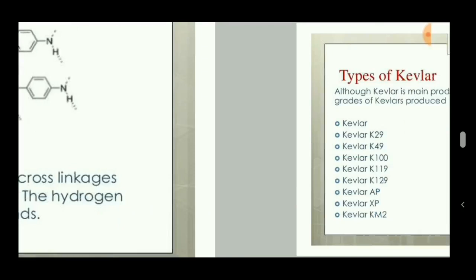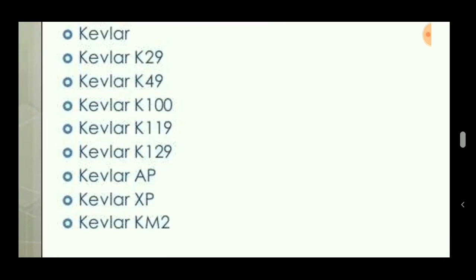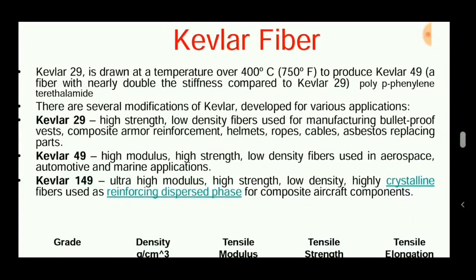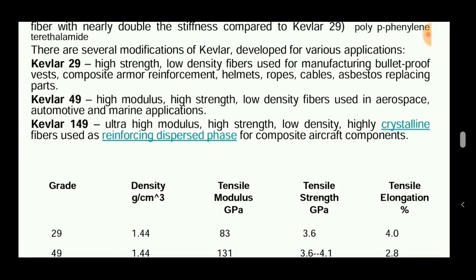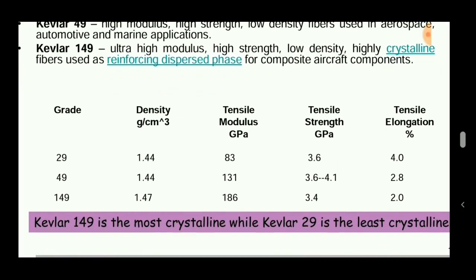The types of Kevlar products are many. Some include Kevlar 29, 49, 100, 119, 129, AP, XP, and KM2. Kevlar 29 is drawn at a temperature over 400°C to produce Kevlar 49. Kevlar 49 has high strength and low fiber density, used in aerospace. Kevlar 149 has ultra-high modulus, high strength, and is highly crystalline.